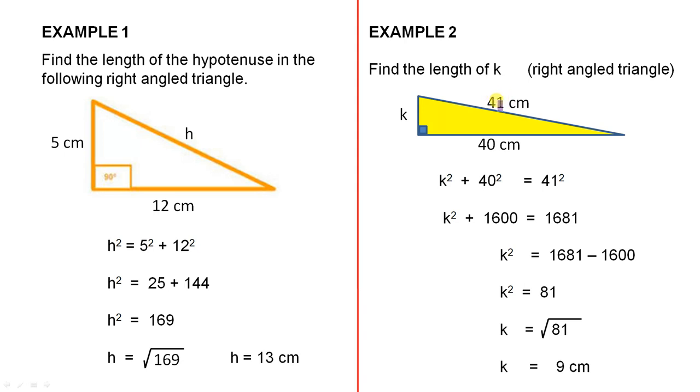The square on the hypotenuse equals the sum of the squares on the other two sides. So k squared plus 40 squared. So here we have the sum of the squares on the other two sides, and that equals the square on the hypotenuse.